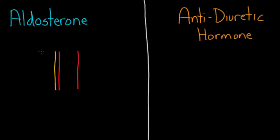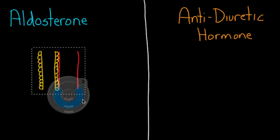So if we have a little nephron here, a little tubule, and these are the cells lining the tubule that eventually send the urine on its way out. Next to it, I have a little blood vessel. And just to save myself from drawing it twice, I'm going to cut and paste this over to this side right here.